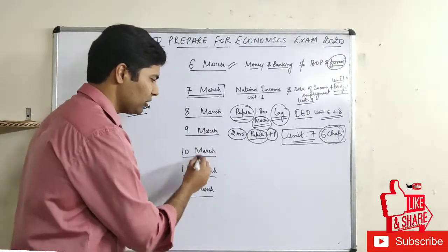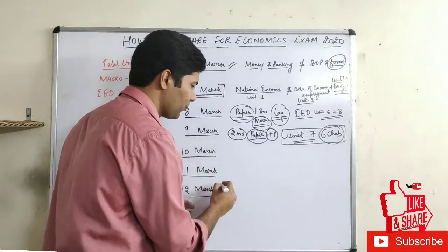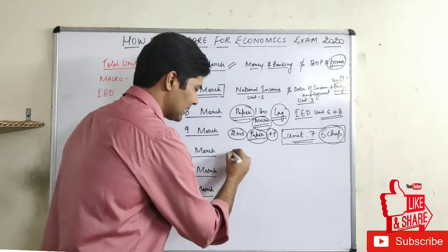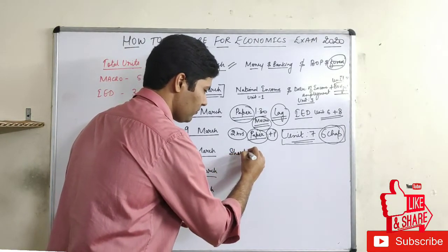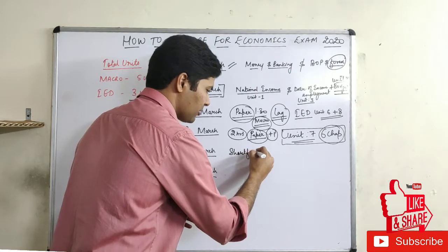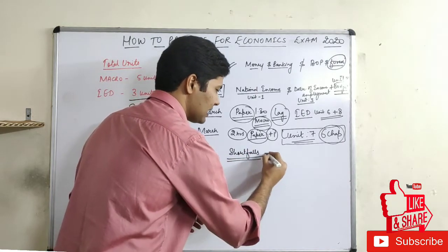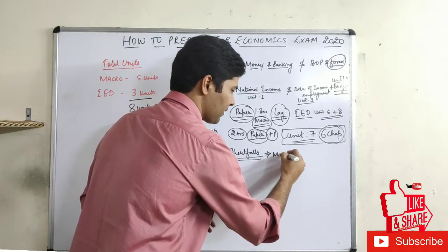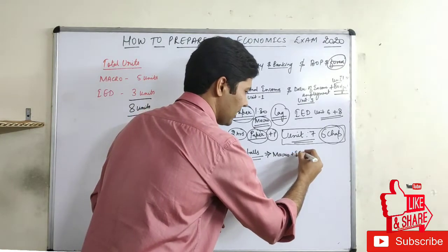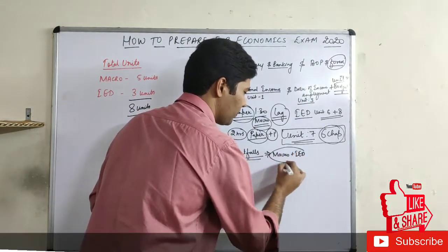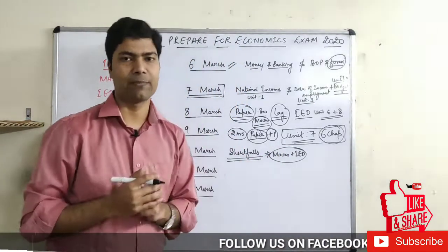On 10th March, address all the loopholes and shortfalls — whether they are in macro or in IED. Focus on those weak areas now. For example, if you have problems with national income questions, work on that specifically.